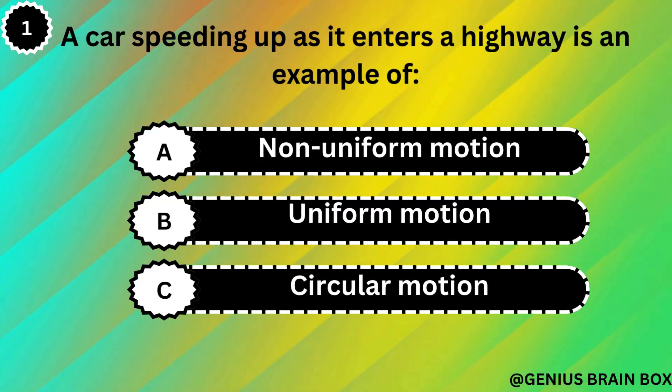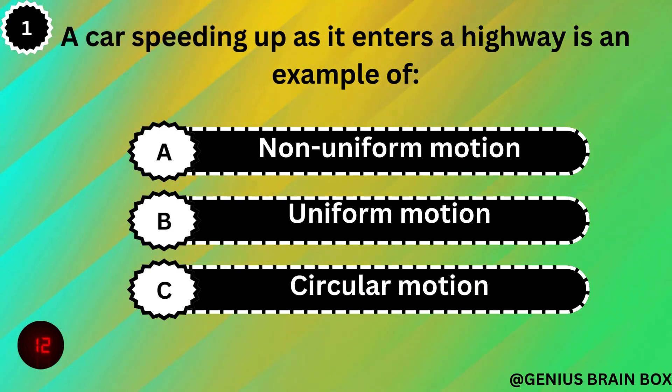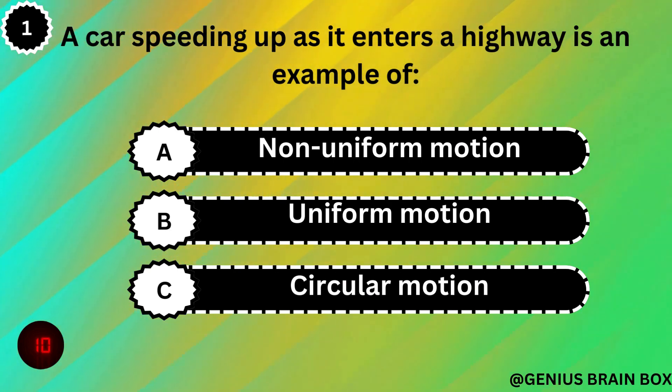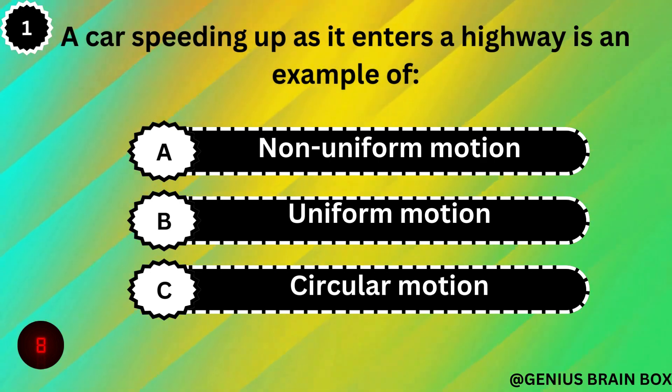A car speeding up as it enters a highway is an example of: non-uniform motion, uniform motion, or circular motion.